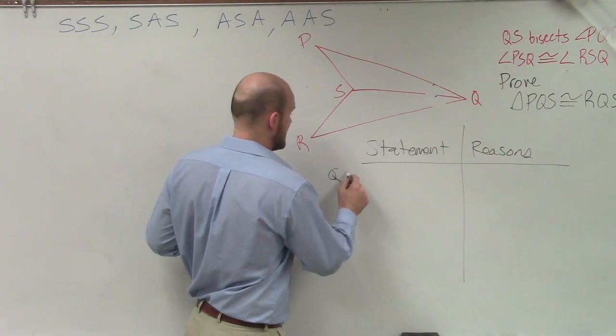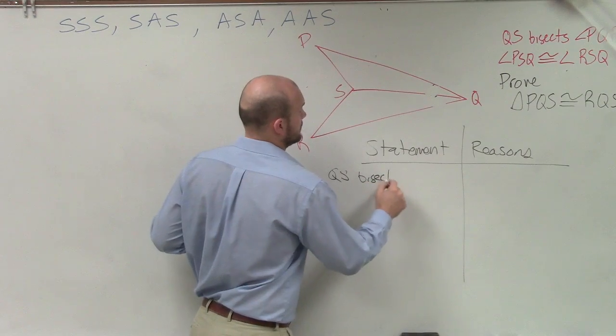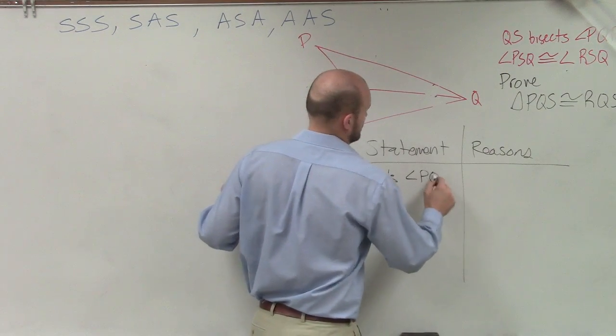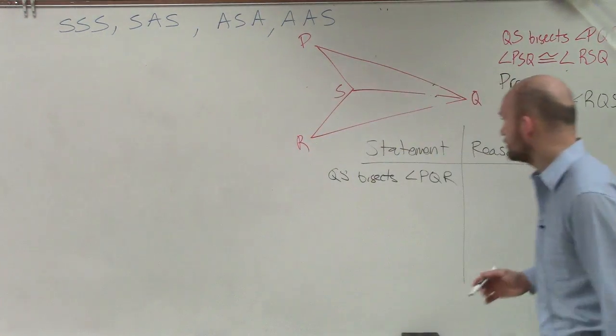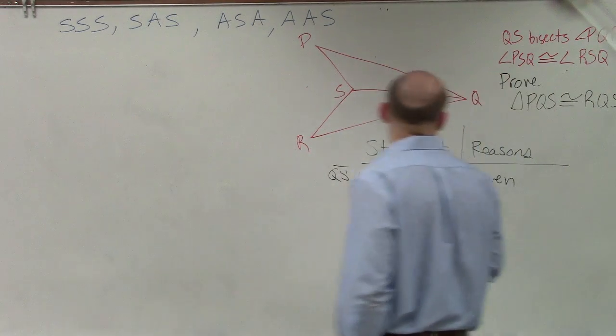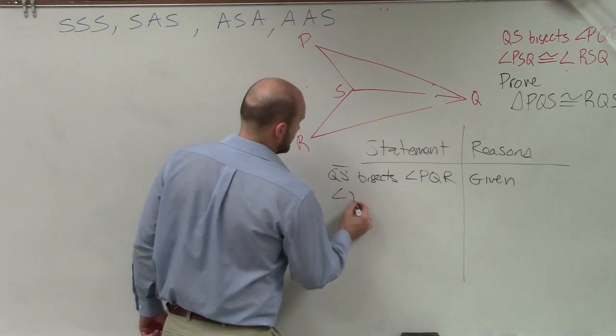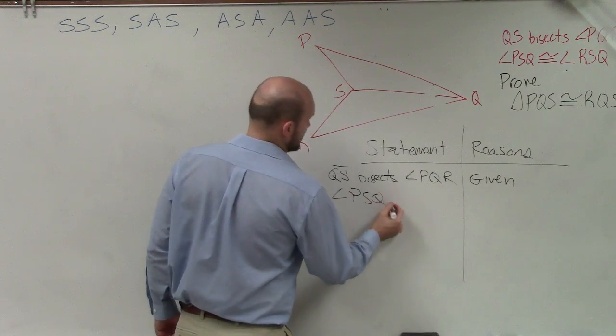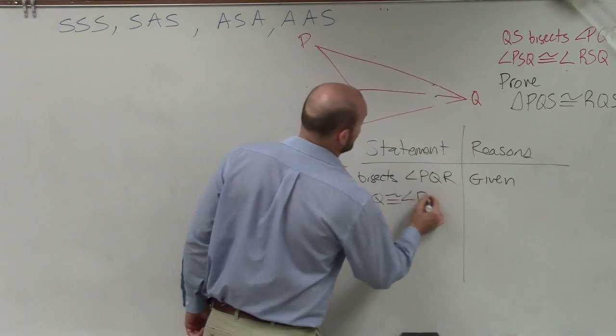I don't think that's as bad. We know that QS bisects angle PQR. Why? Because that's given.